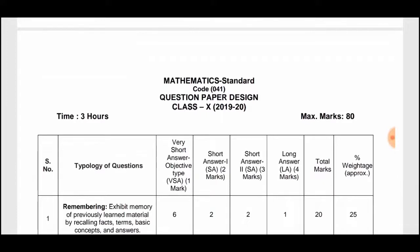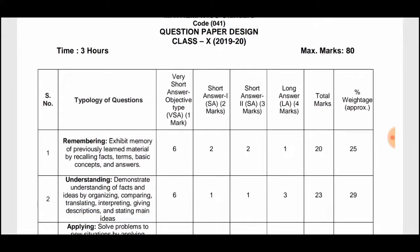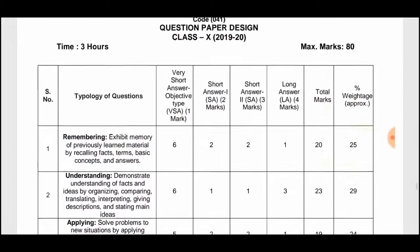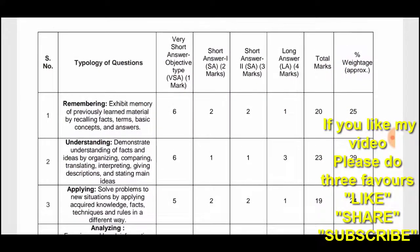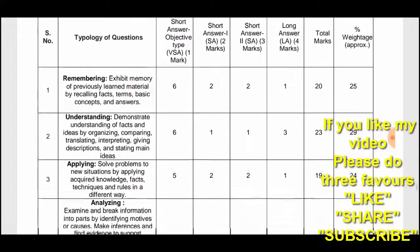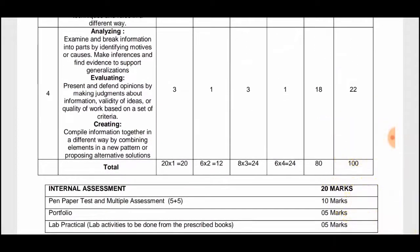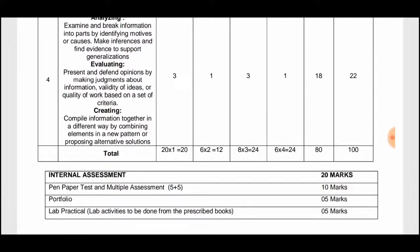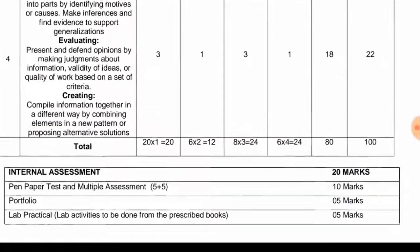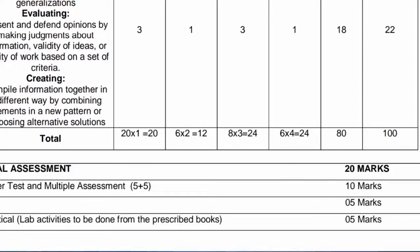Mathematics Standard, code 041 — Question Paper Design. This is the paper style sent by CBSE. Inside this, they have given how many types of questions and of how many marks are going to come. First, very short answer objective questions — one mark each — total 20 questions. Then six questions of two marks, eight questions of three marks, and six questions of four marks. Total 80 marks, plus 20 marks internal assessment: pen-paper test and multiple assessment (5+5=10), portfolio 5 marks, and lab practical 5 marks.